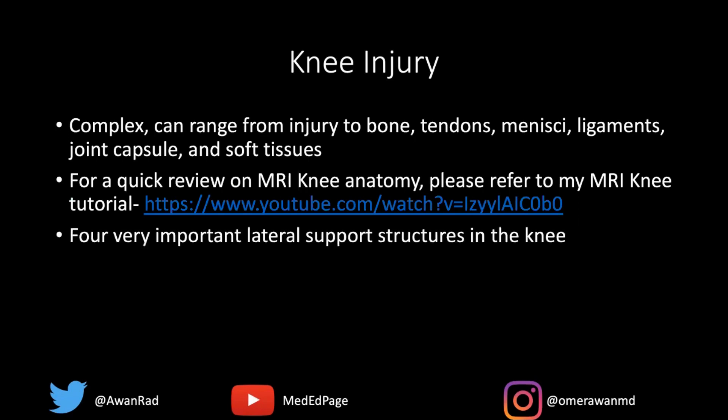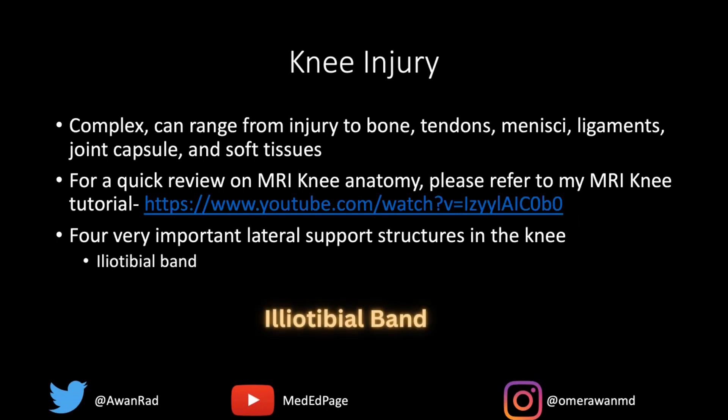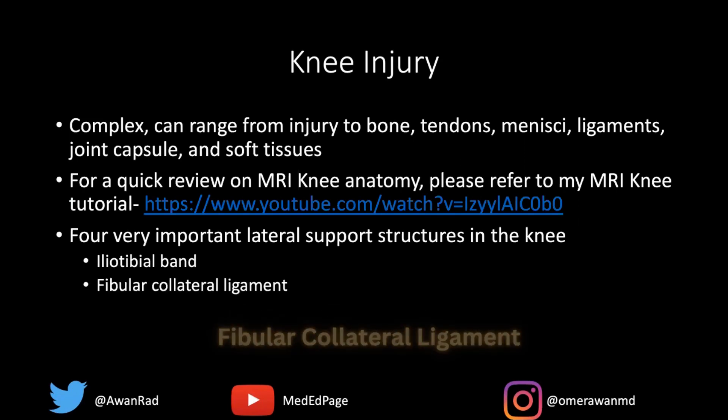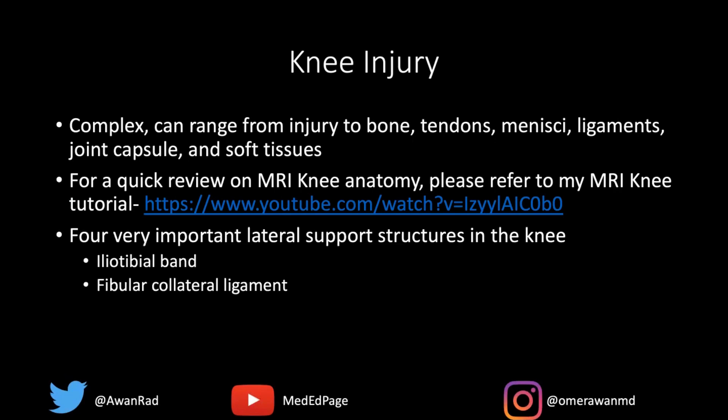There are four important lateral structures in the knee that are important for stability. Going anterior to posterior, we start with the iliotibial band, which is formed in the pelvis and inserts along the anterior lateral tibia at a place called Gerdy's tubercle. Right after that, we have the fibular collateral ligament, which runs from the lateral femoral condyle and inserts onto the fibular head.